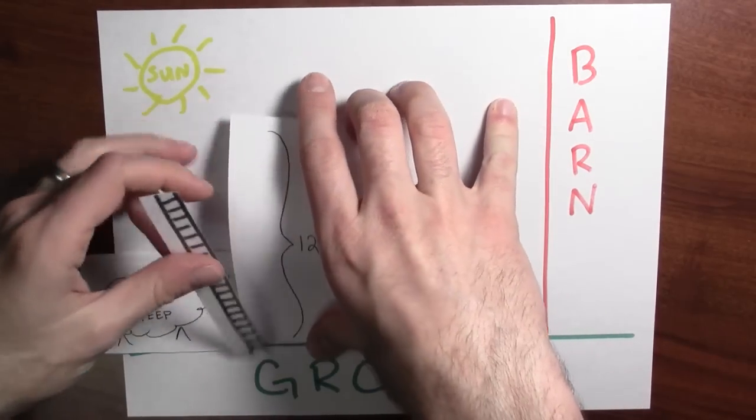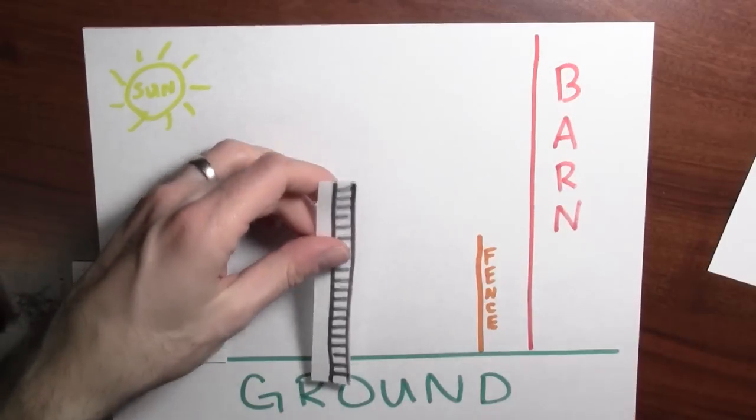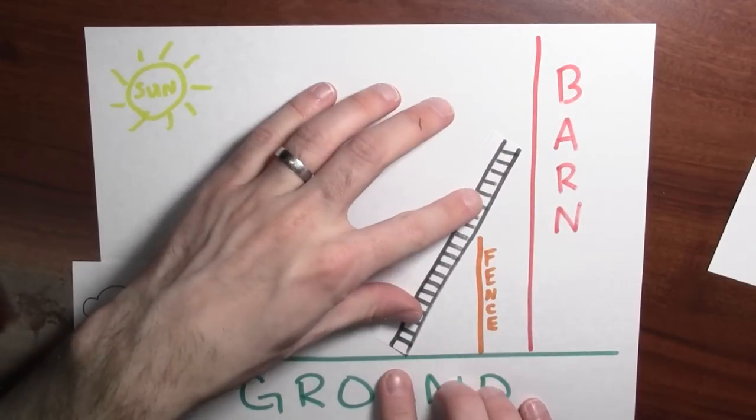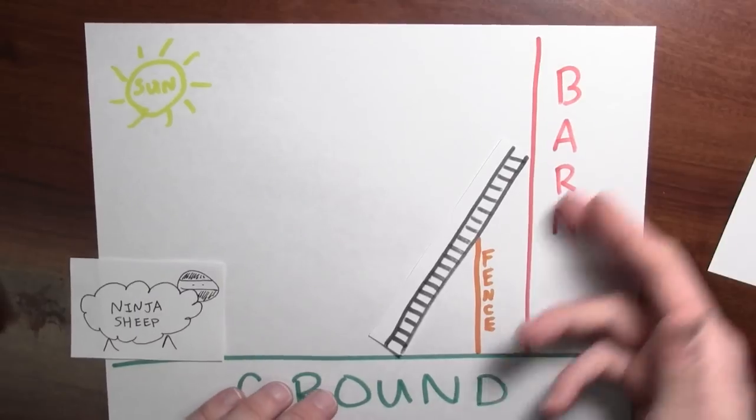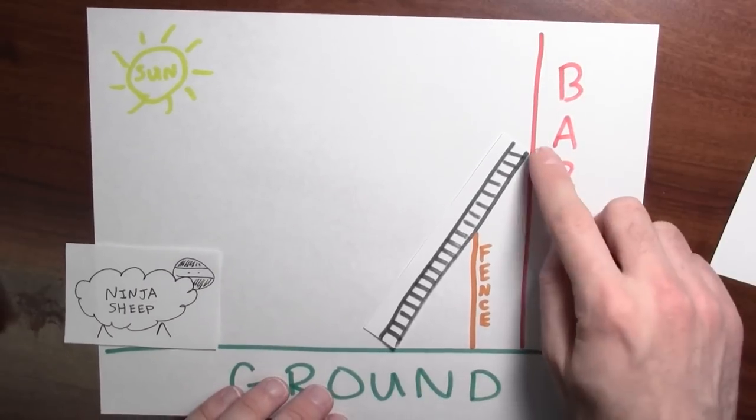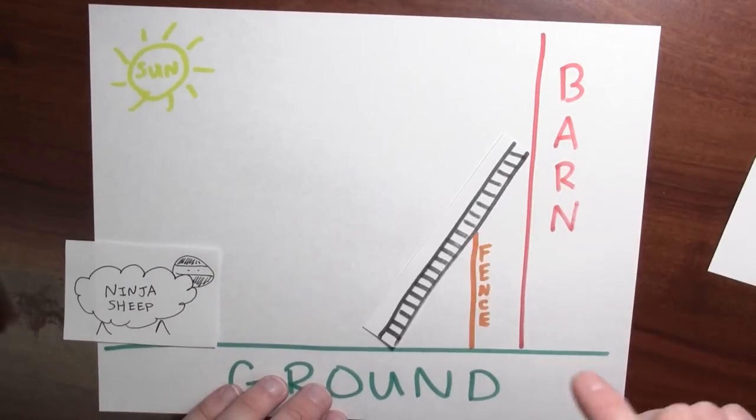And here, this drawing is actually a scale, so I can really demonstrate it. You know, here I'm positioning the ladder, and yeah, this ladder is, in fact, long enough to touch the ground, the barn, and just clear the fence.